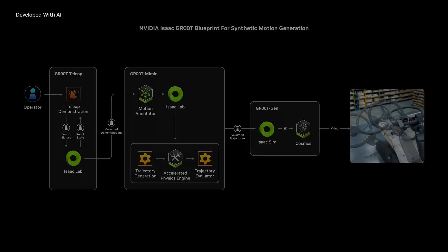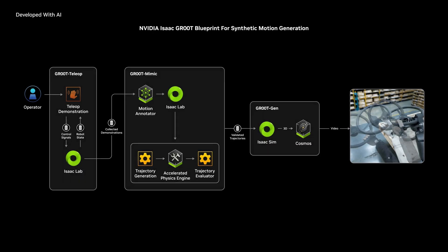The NVIDIA Isaac Groot blueprint for synthetic motion generation is a simulation workflow for imitation learning, enabling developers to generate exponentially large datasets from a small number of human demonstrations.